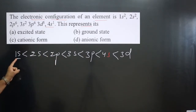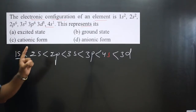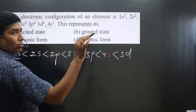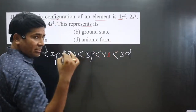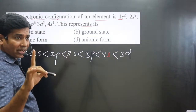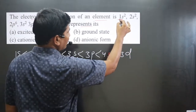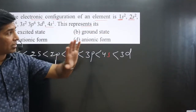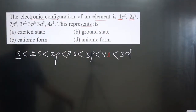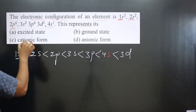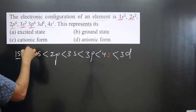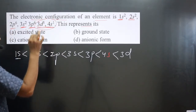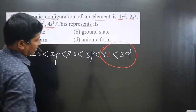According to the Aufbau principle, lower energy orbitals should be completely filled before filling the higher energy orbitals. Looking at the electronic configuration: 1s is completely filled, 2s is completely filled, 2p6 is completely filled, 3s2 is completely filled, 3p6 is also completely filled. In the last, we have 4s and 3d.